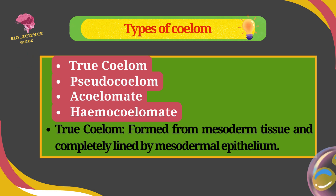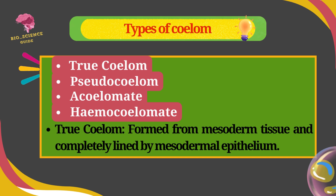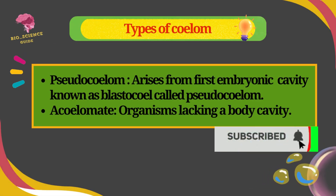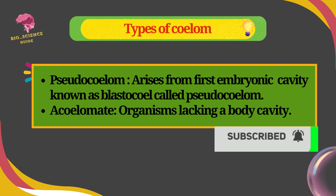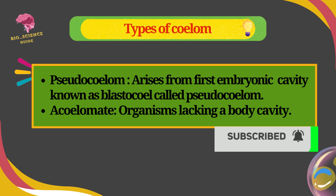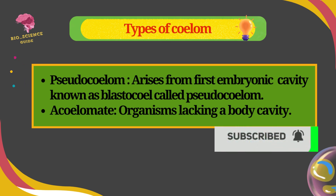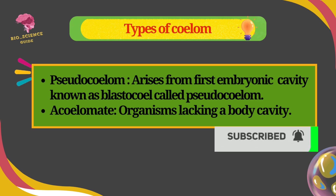True Coelom is found in annelids, molluscs, and chordates. Pseudocoelom arises as the first embryonic body cavity as a blastocoil, called Pseudocoelom or Pseudocoil. It is found in Aschelminthes.